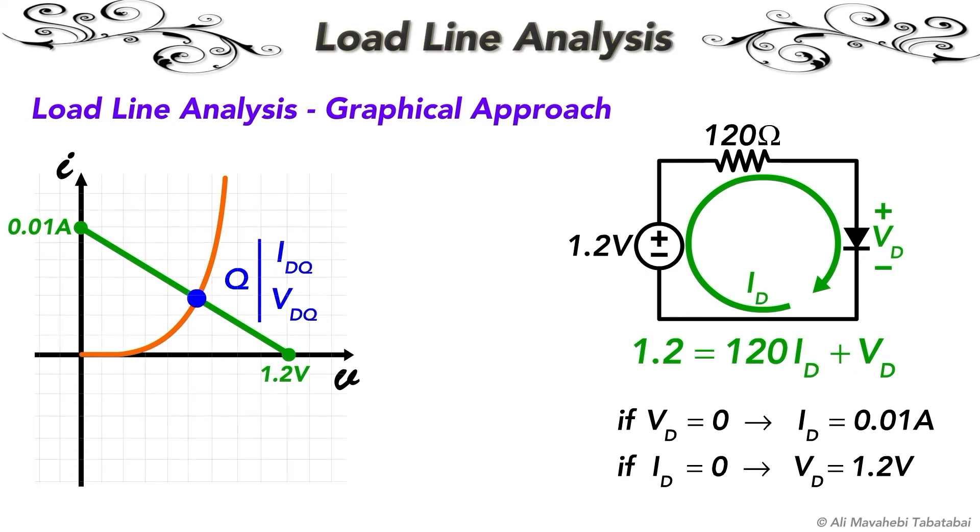For example, by looking at this graph, we can estimate that the Q point value for the diode voltage is approximately 0.75 V, and the current value is slightly less than 4 mA. So with a good approximation, we can find the voltage and current values of the quiescent point.